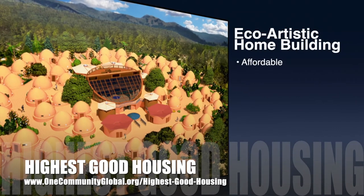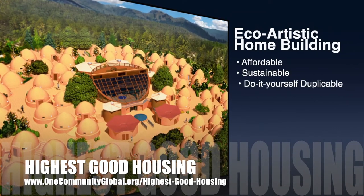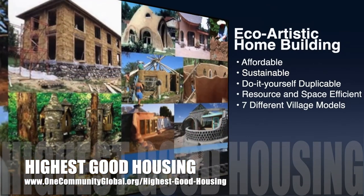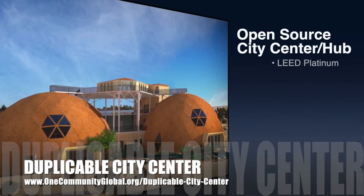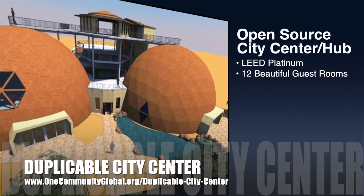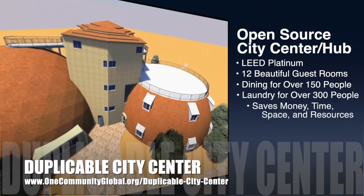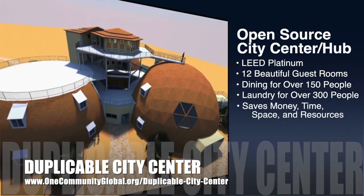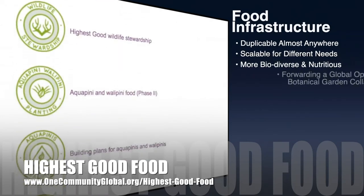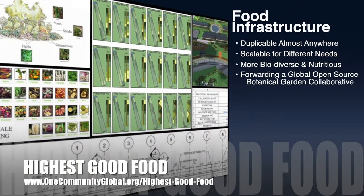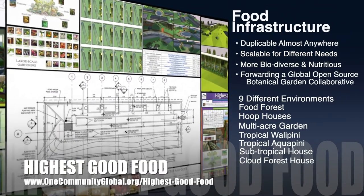The One Community approach to highest good housing is eco-artistic home building that is affordable, sustainable, do-it-yourself duplicable, resource and space efficient, and consists of seven different sustainably constructed village models. One Community is also creating an open source duplicable city center — designed to be LEED Platinum certified, provide 12 guest rooms, dining for over 150 people, and laundry and recreation space for over 300 people, all while saving money, time, space, and resources. One Community's approach to highest good food is duplicable almost anywhere, scalable for different needs, more biodiverse and nutritious, part of forwarding a global open source botanical garden collaborative, and includes nine different free shared and duplicable growing environments.